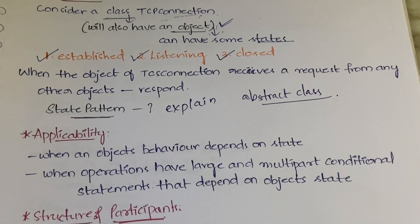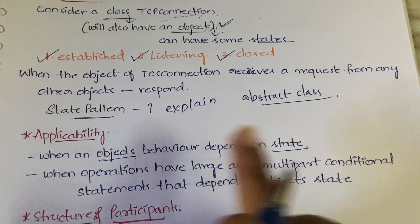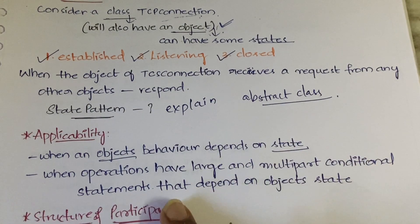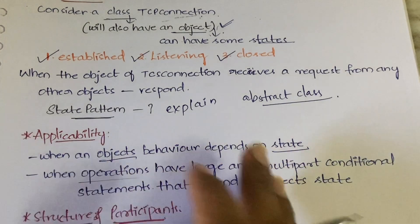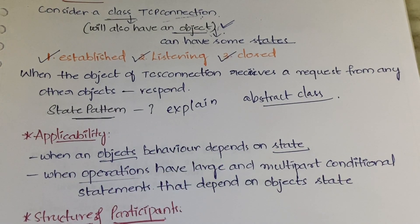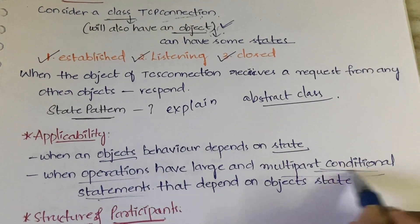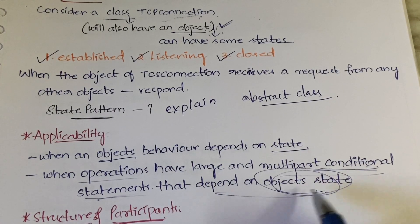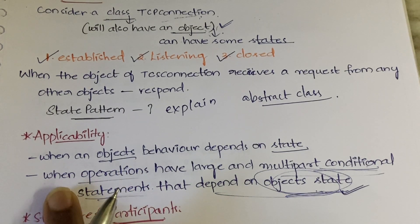Moving to applicability — this tells us in which situations we can apply this pattern. Use it when an object's behavior depends on its state, and when operations have large, multi-part conditional statements that depend on the object's state. It is mostly concerned with objects and their states.